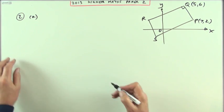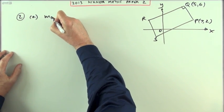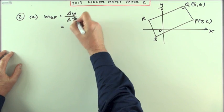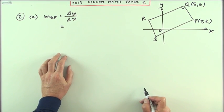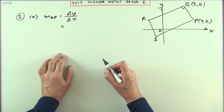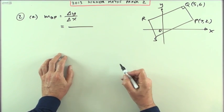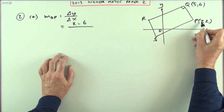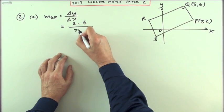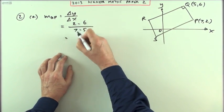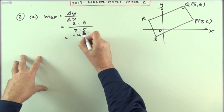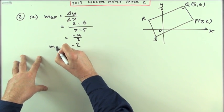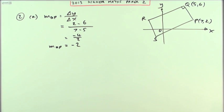So I'll get the gradient of QP first of all. y2 minus y1, x2 minus x1. Difference of y over difference in x. That would be difference in the y coordinates: 2 take away 6. Difference in the x coordinates: 7 take away 5. 2 take away 6 is negative 4. 7 take away 5 is 2, so that means the gradient is negative 2.